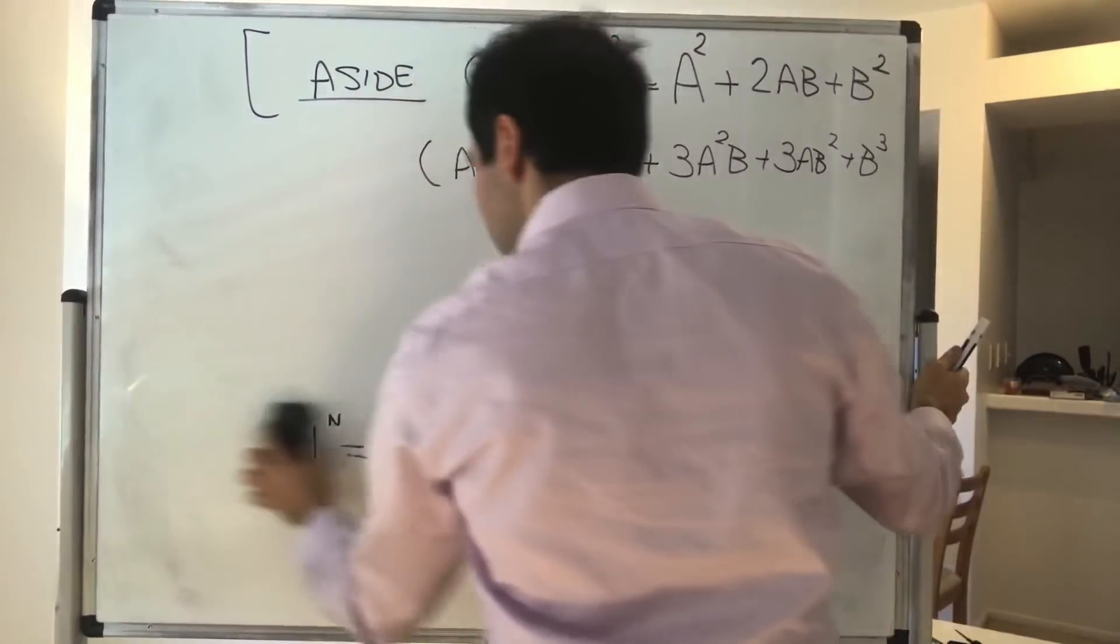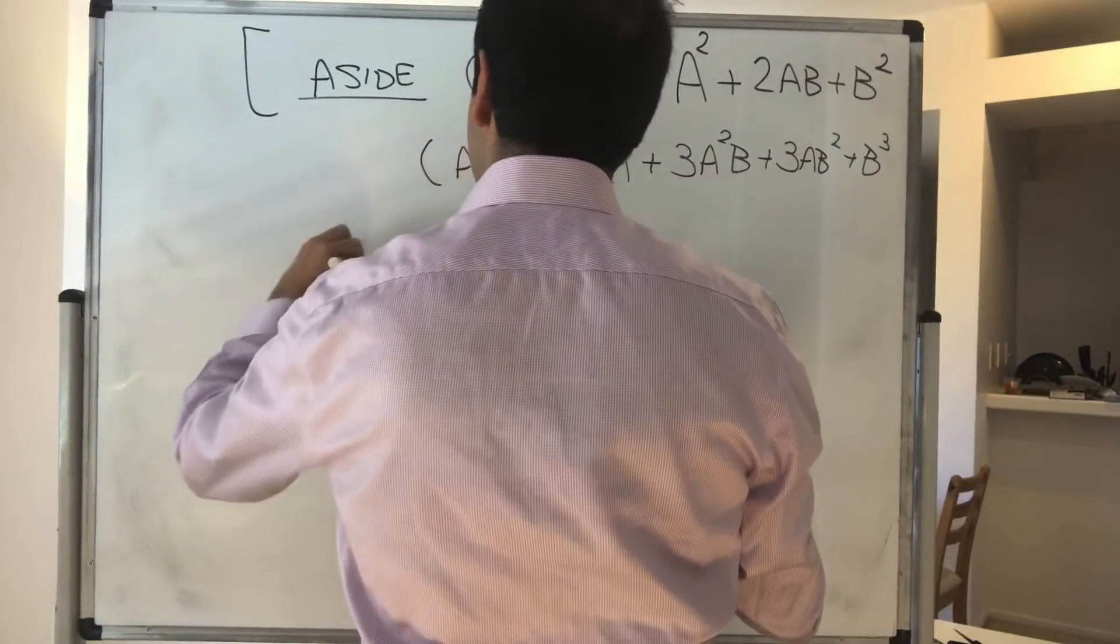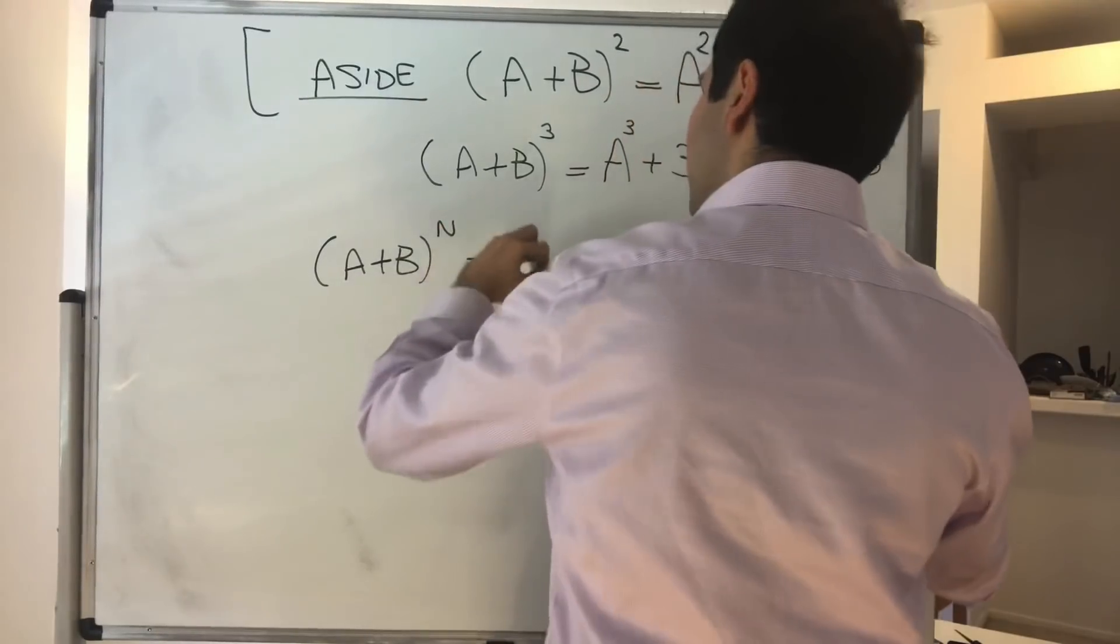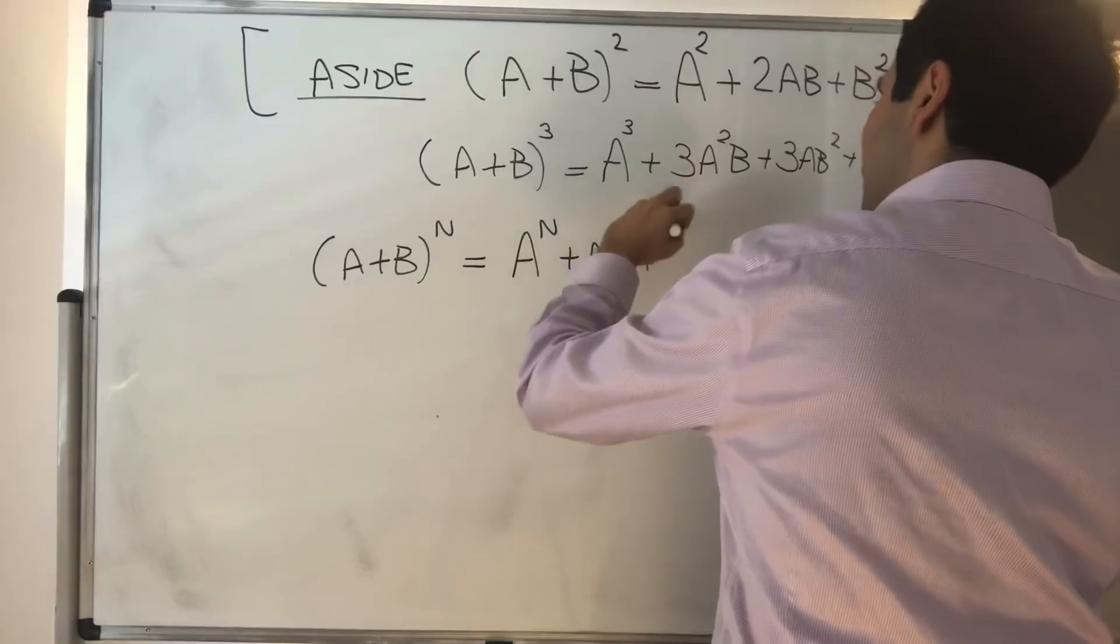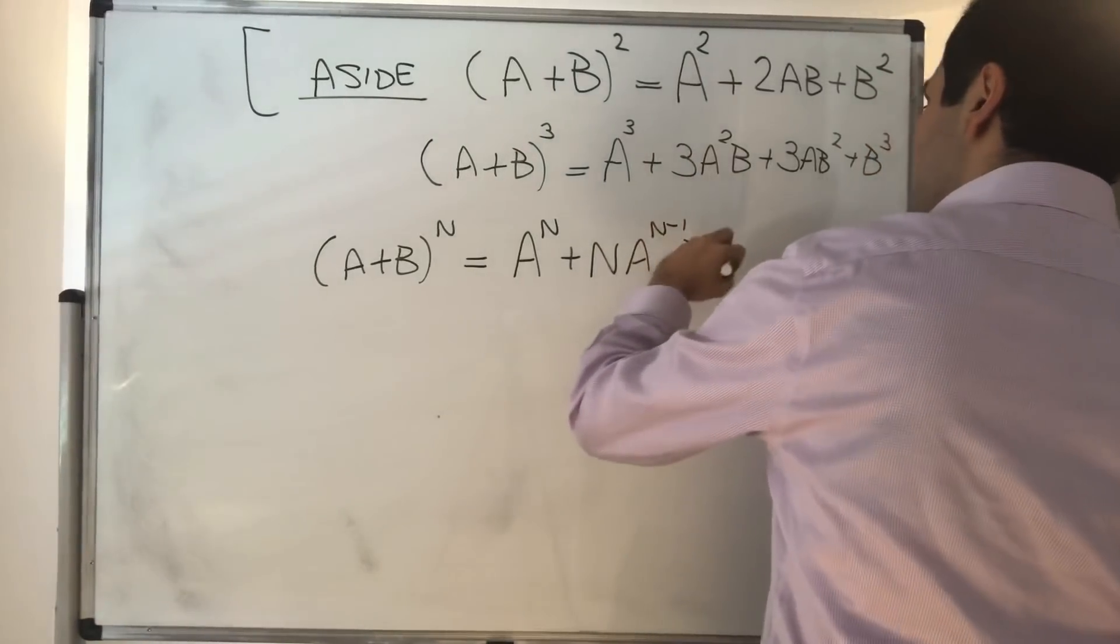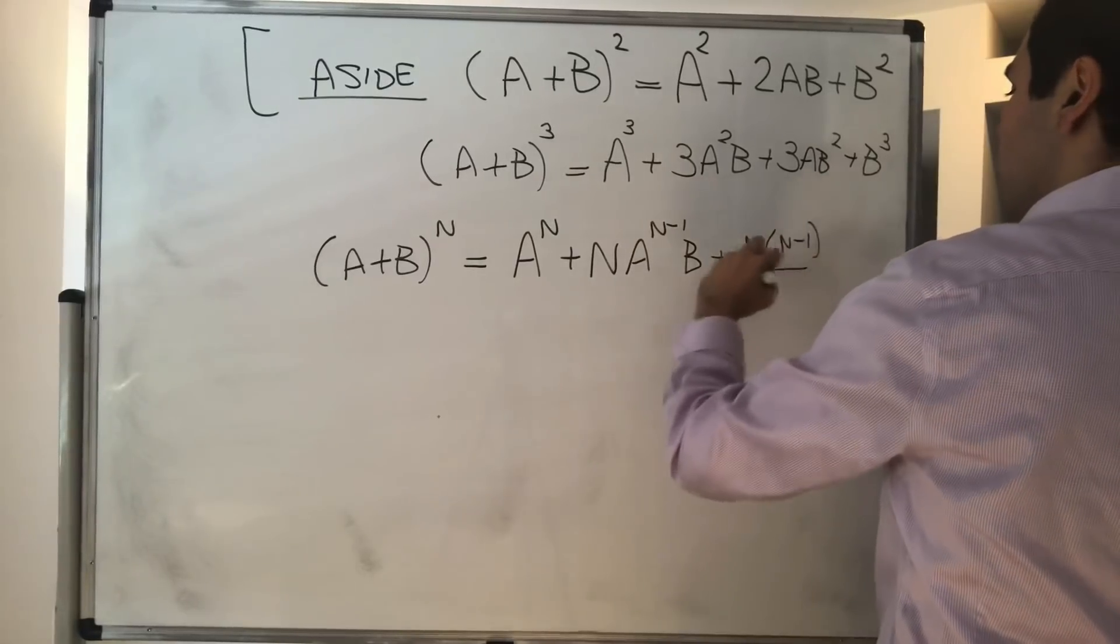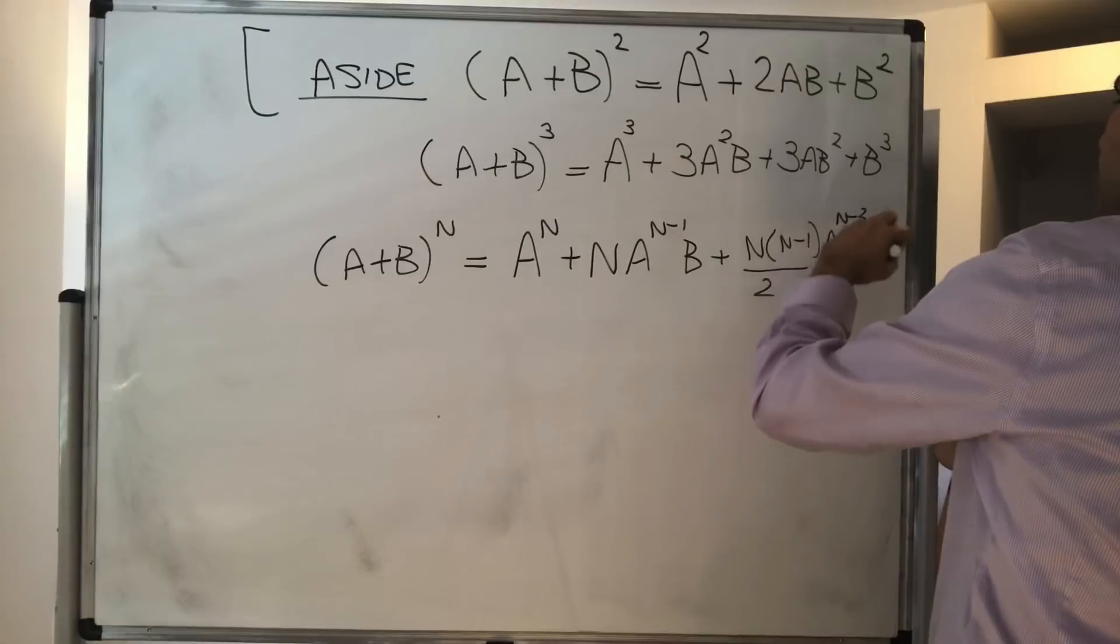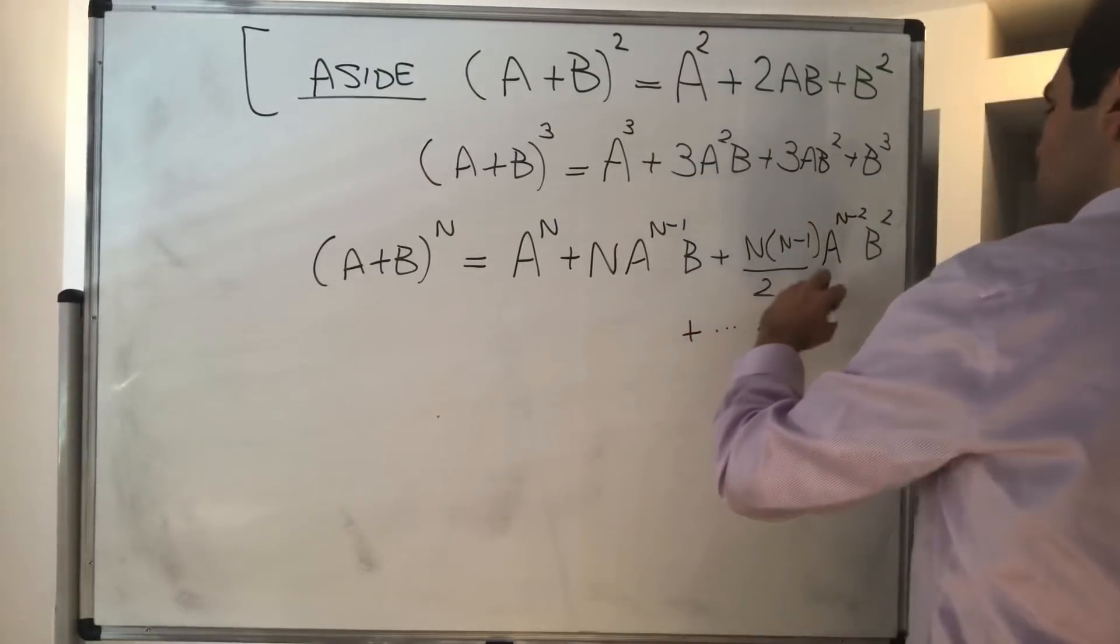And it turns out we can do the same thing for a plus b to the n. So it turns out a plus b to the n, it's a to the n plus n times a to the n minus 1 times b, plus n choose 2, so n times n minus 1 over 2, times a to the n minus 2 times b squared, et cetera, up to b to the n.